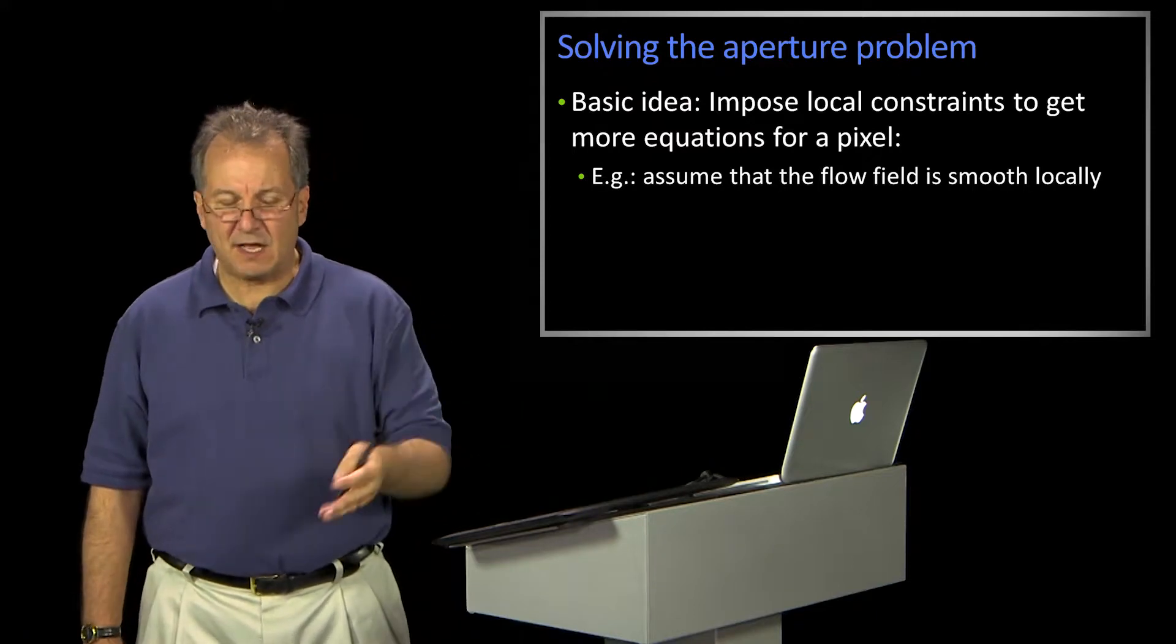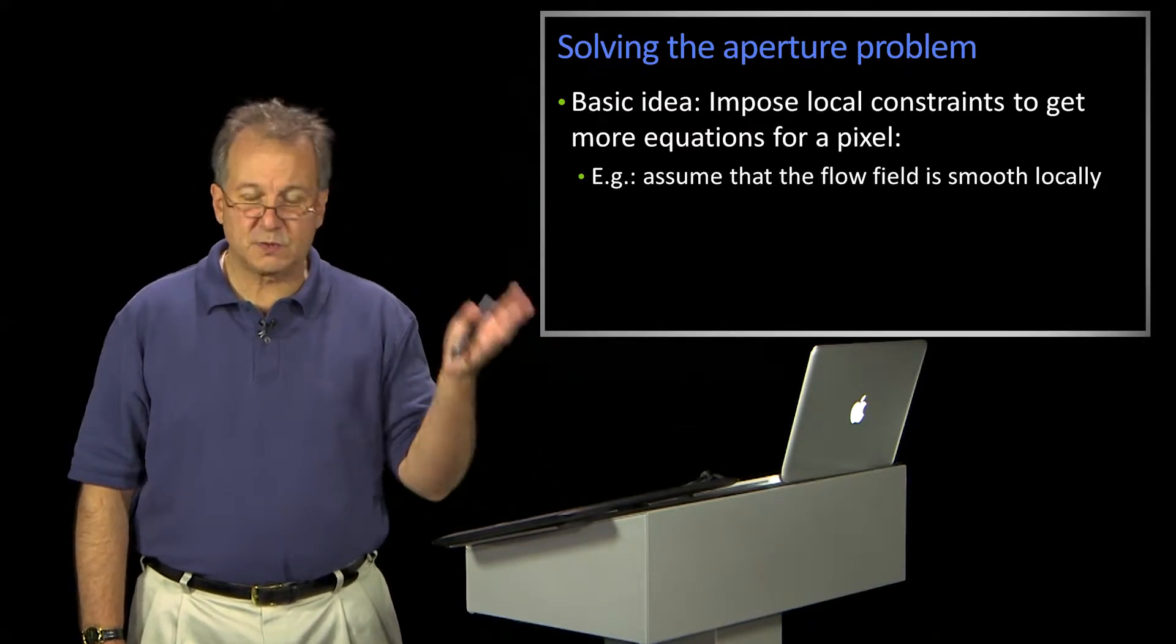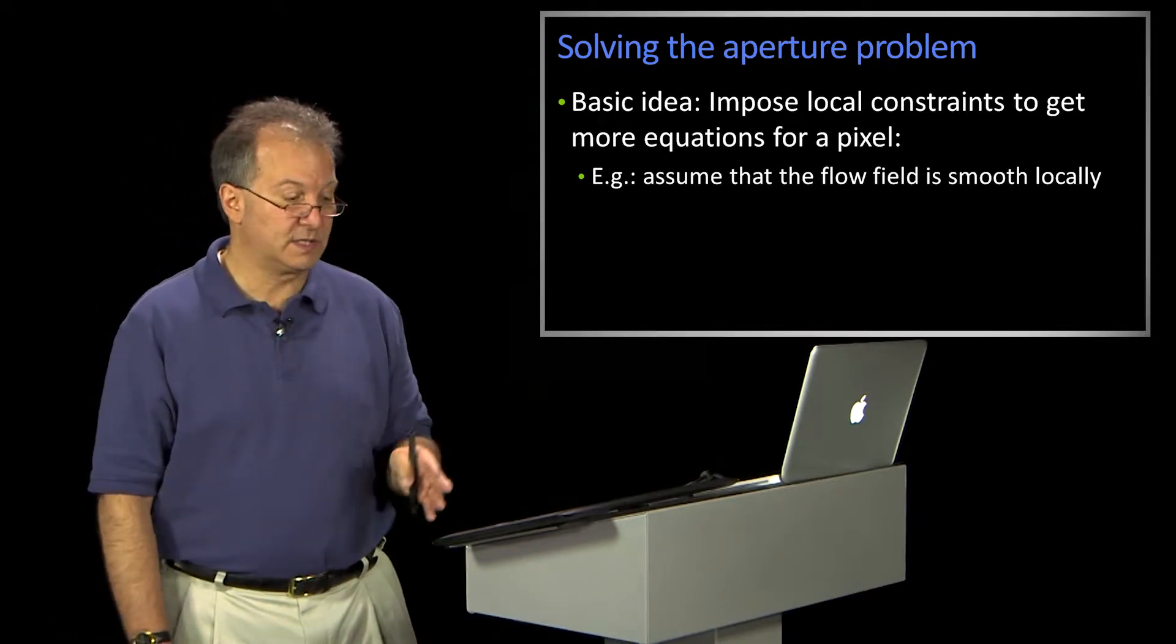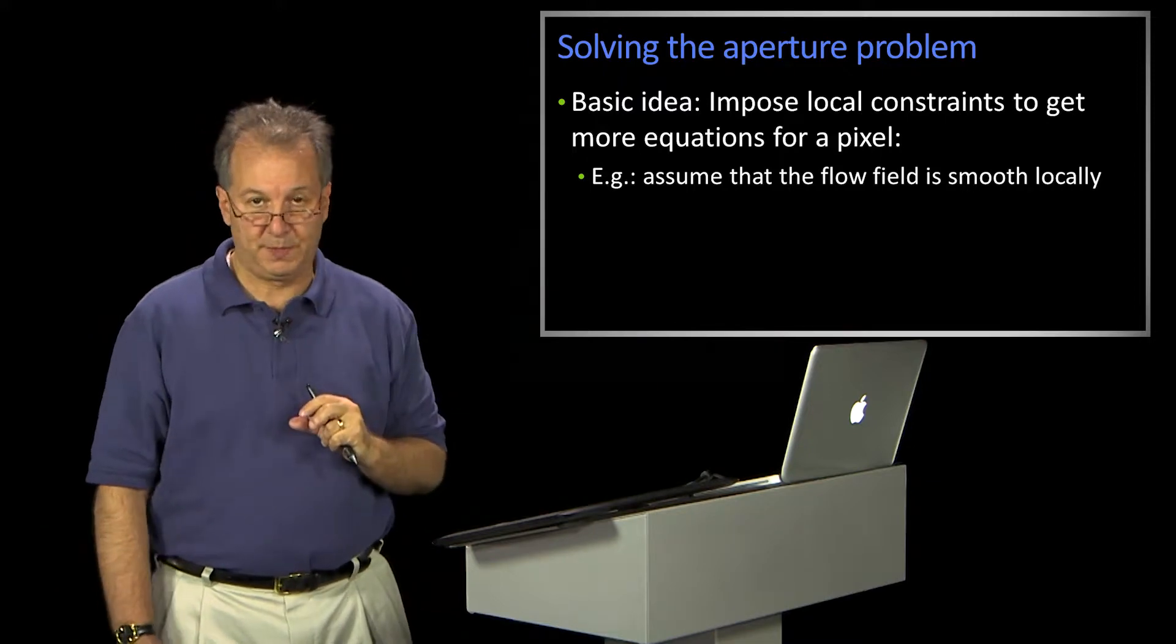So basically to solve that, we had to impose some form of constraints. First we did the global constraints, then we did the local constraints of Lucas-Kanade. And the idea was by having these local constraints, we could have more than one equation per pixel.